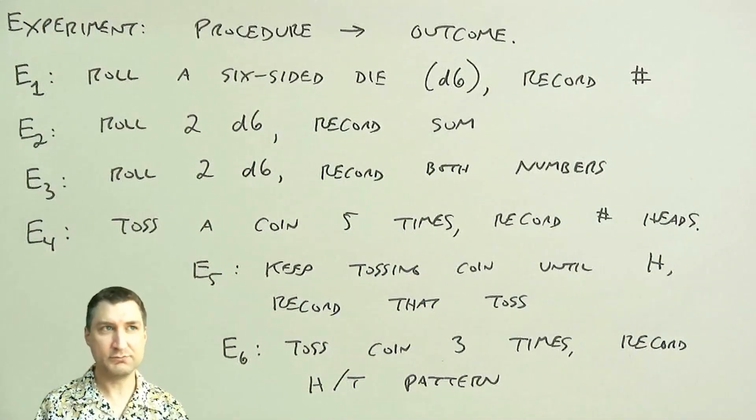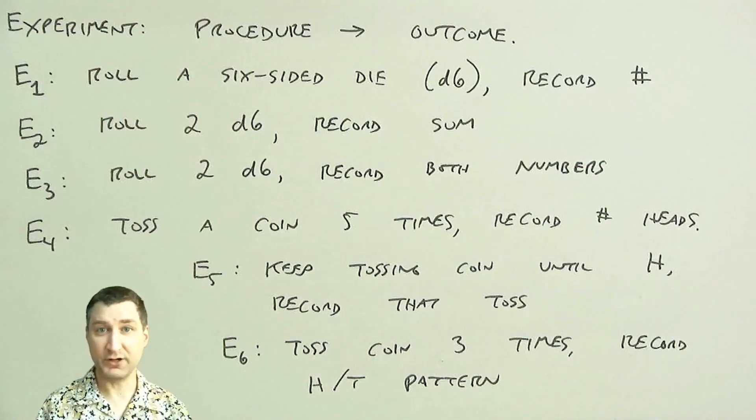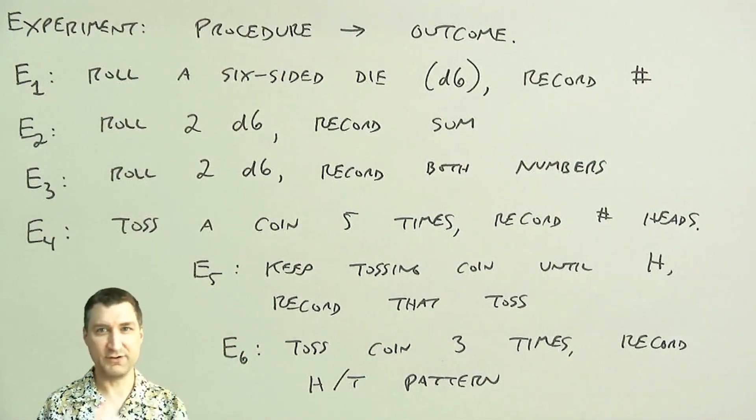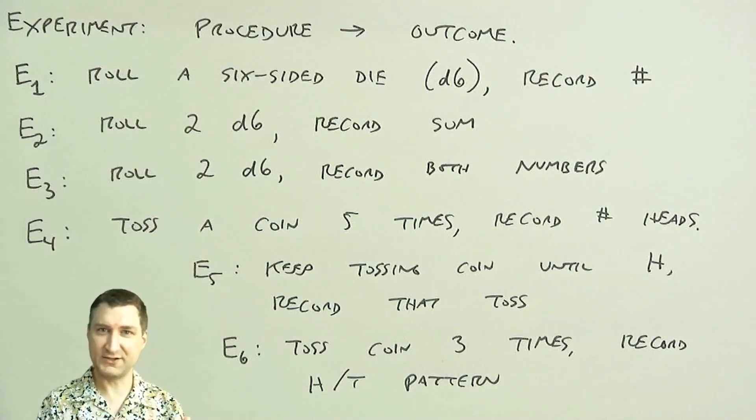So these are all kind of experiments that result in what I would call a discrete outcome, right? A head or a tail, one, two, three, four, five, six, right? Things that I can kind of count on my fingers.